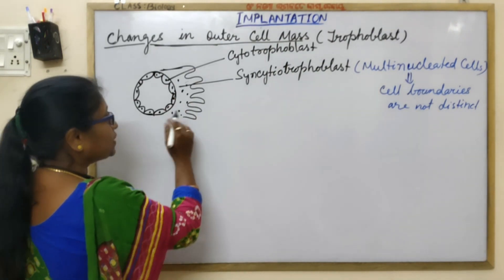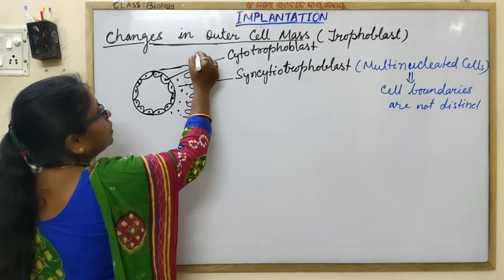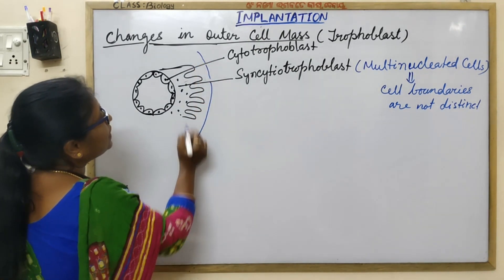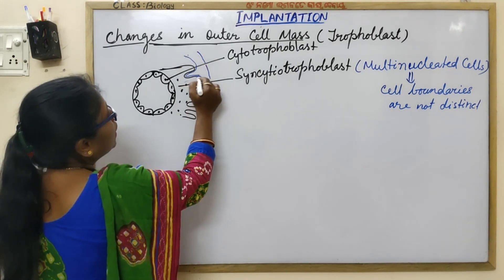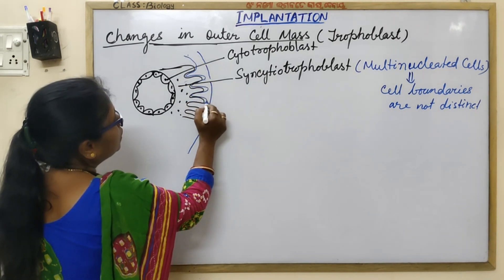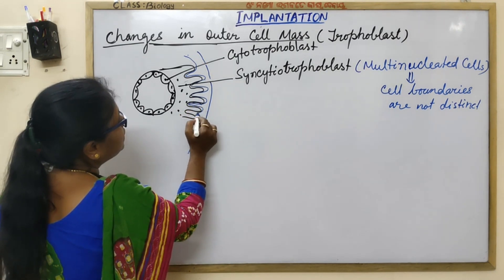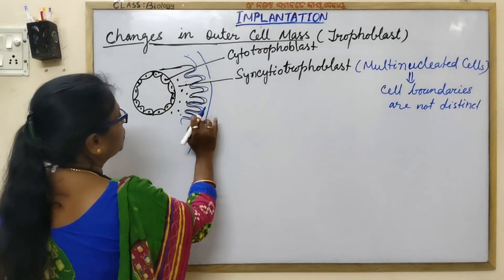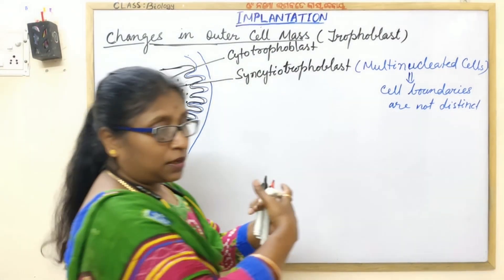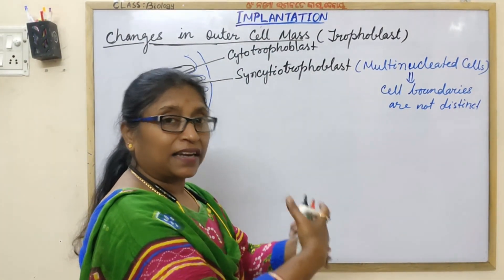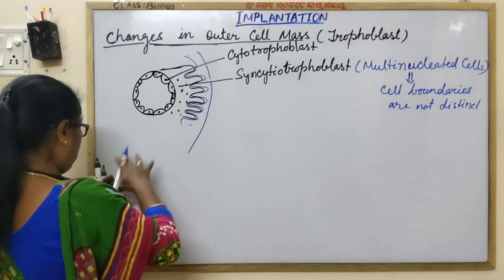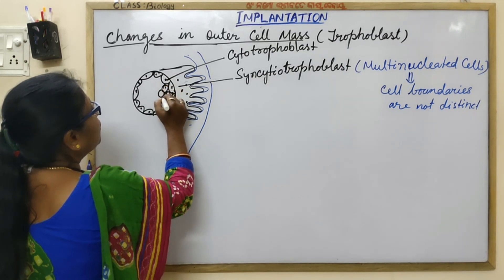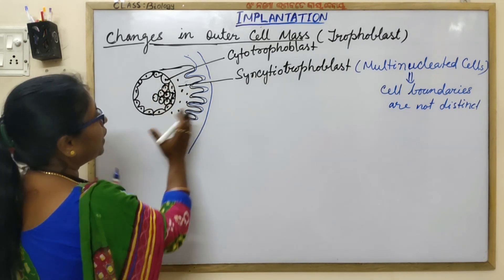It is growing rapidly on the side which is in contact with the uterine wall or endometrium. It makes interdigitation with the endometrial tissue. This way the blastocyst becomes firmly connected with the endometrium.